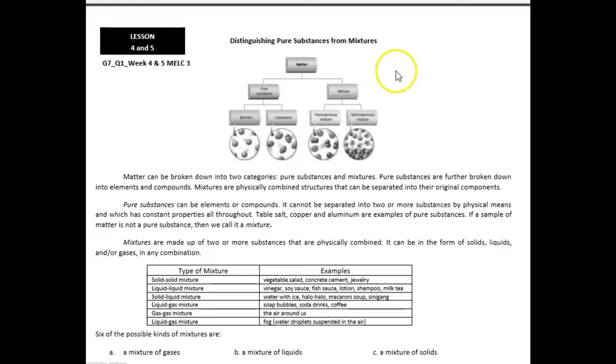Matter can be broken down into two categories, pure substances and mixtures. Pure substances are further broken down into elements and compounds. Mixtures are physically combined structures that can be separated into their original components. It can be homogeneous mixture or heterogeneous mixture.